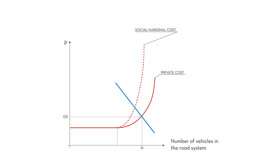The social net loss during rush hours is equal to the light blue shaded area. We can internalize the extra costs imposed on the drivers by collecting a congestion toll of A Norwegian crowns, lifting up the private cost curve.